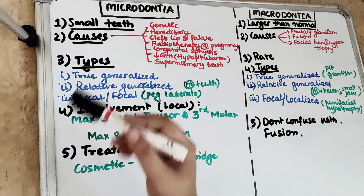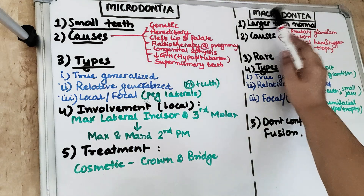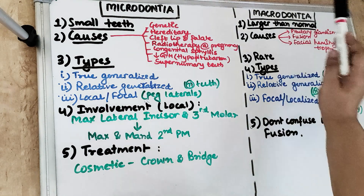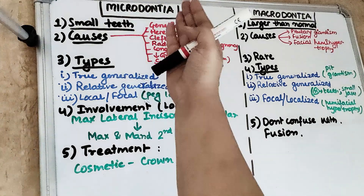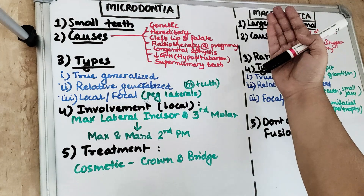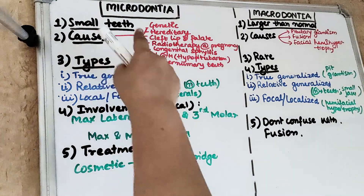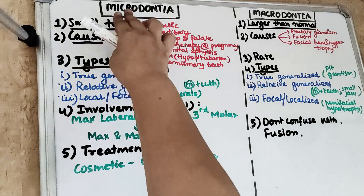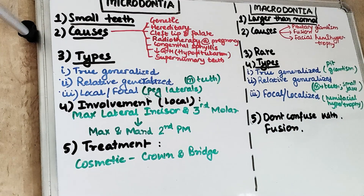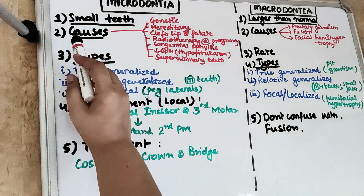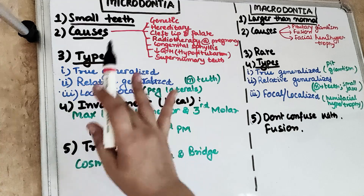As the name suggests, Micro means small, Dontia means teeth — so Microdontia means small teeth. Macro means big, Dontia means teeth — so Macrodontia means large teeth. So the first point is: smaller teeth. As the name suggests, the teeth are going to be smaller as compared to the normal teeth.